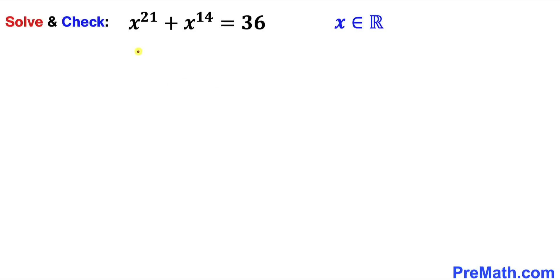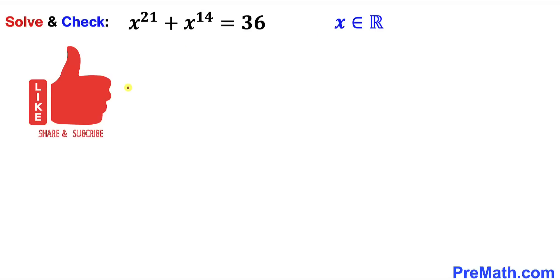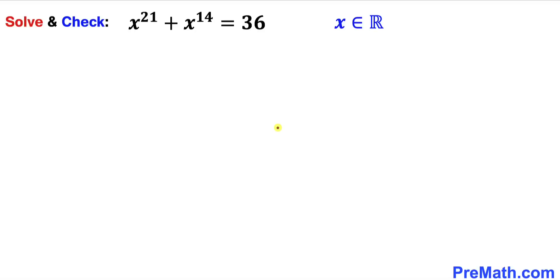In this video we are going to solve the equation x²¹ + x¹⁴ = 36, where x are real numbers, and eventually we are going to check our solutions as well. Let's go ahead and get started with the solution.